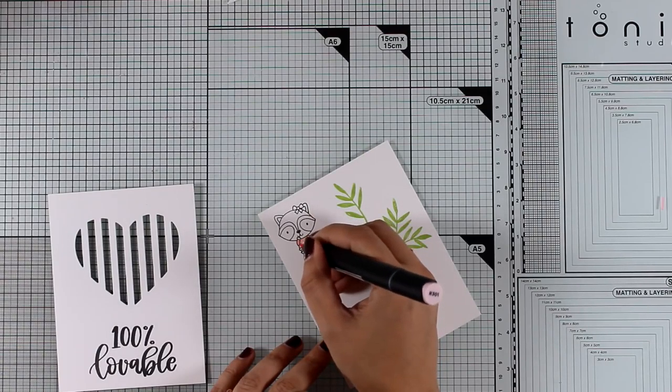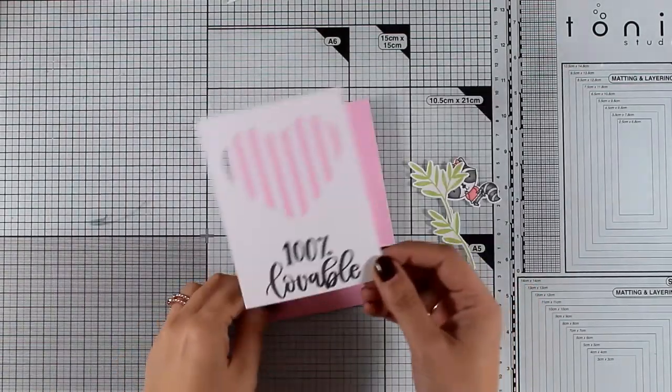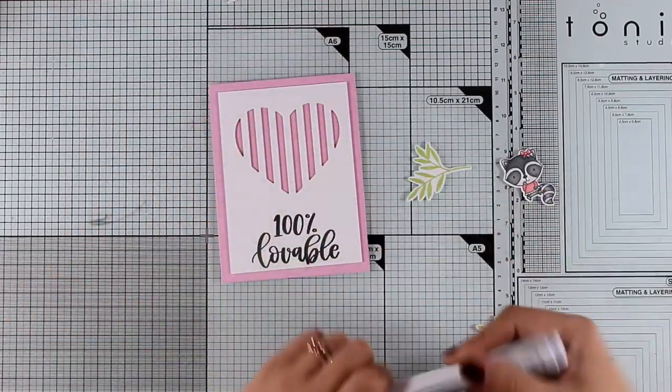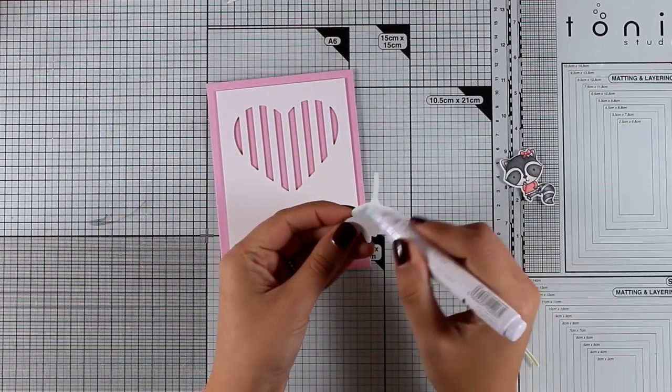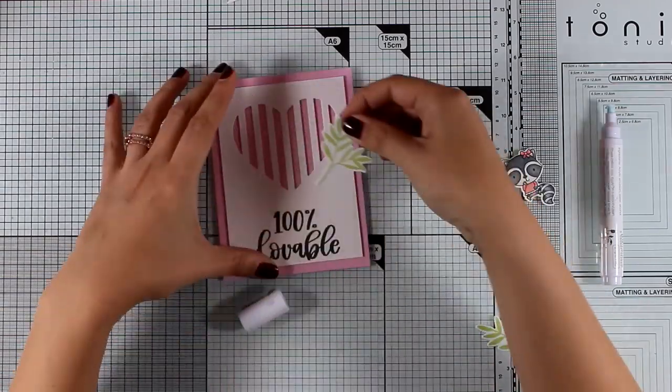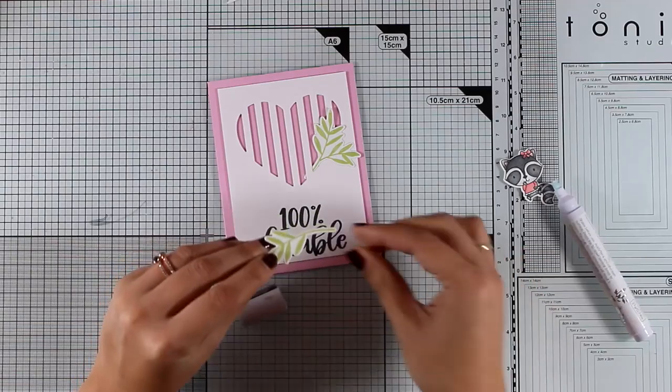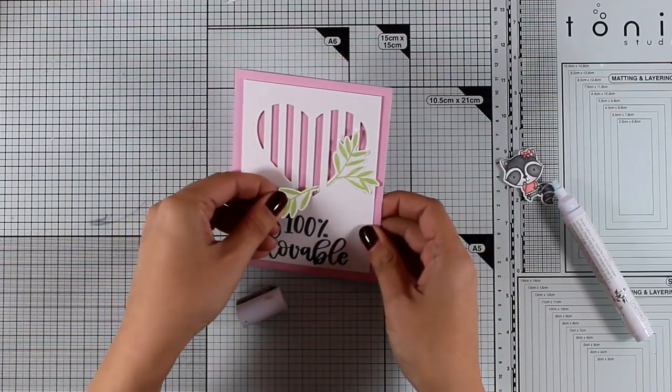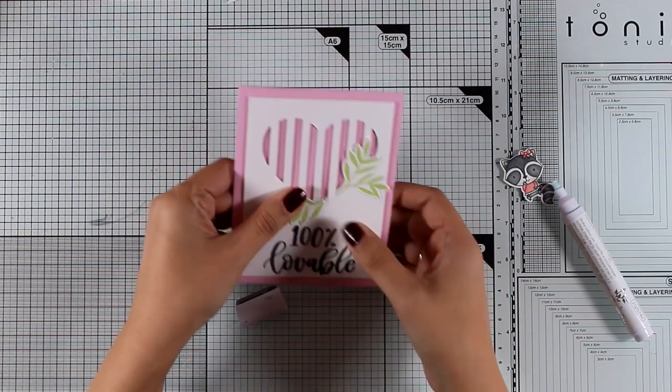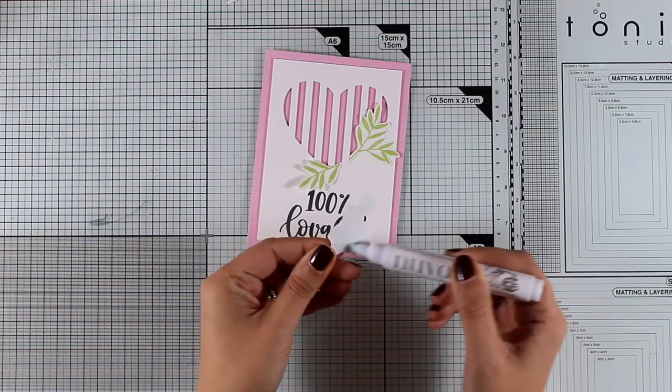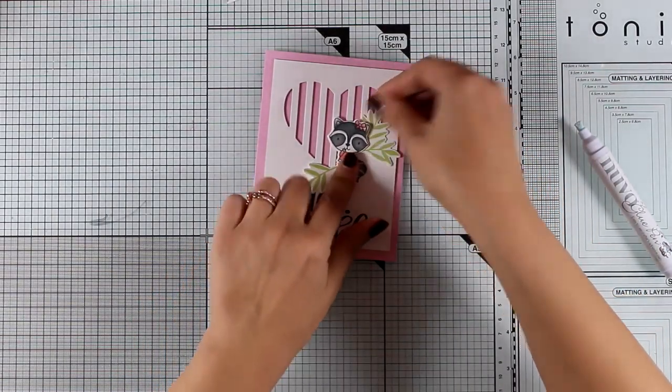For my card base I'm using pink colored cardstock. I've stuck on top of the panel using some foam tape at the back and I'm going to create the cluster. I'm adding those leaves as if they are coming from the grid, so I'm just tucking them there. And then on top I'm going to stick the little raccoon which is just adorable and I think it really makes the card.